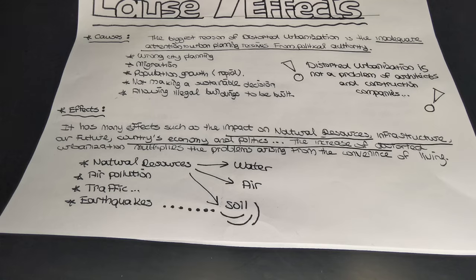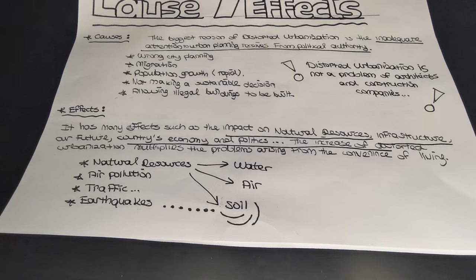Another effect is that the rate of urbanization is increasing, which causes air pollution. The increase of urbanization and pollution multiplies problems arising from convenience of living, for example the increase in traffic, transportation, lack of education, industrialization, and the rate of air pollution. Traffic also causes noise pollution. Air pollution and noise pollution are effects of both urbanization and distorted urbanization, but if the distorted urbanization level gets bigger, the air pollution and noise pollution level gets bigger too because of the population growth.